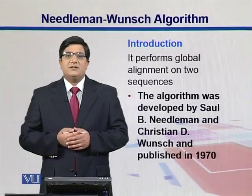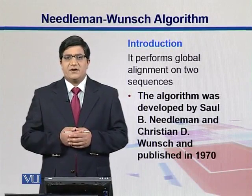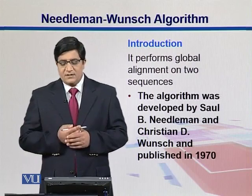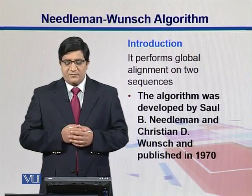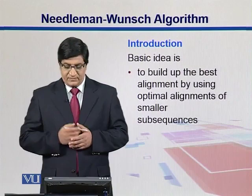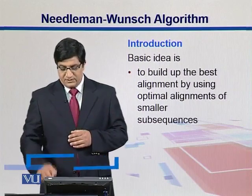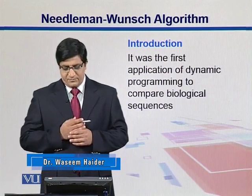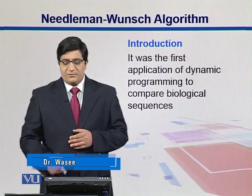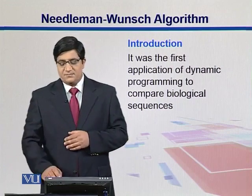Needleman and Wunsch is an optimal alignment algorithm. It's a dynamic programming approach used while doing global alignment, where we are aligning two sequences over their full lengths. It was presented by Needleman and Wunsch in 1970. The basic idea is to build up the best alignment by using optimal alignments of smaller subsequences. This algorithm is the first implementation of the dynamic programming approach to biological sequence analysis and sequence comparison problems.